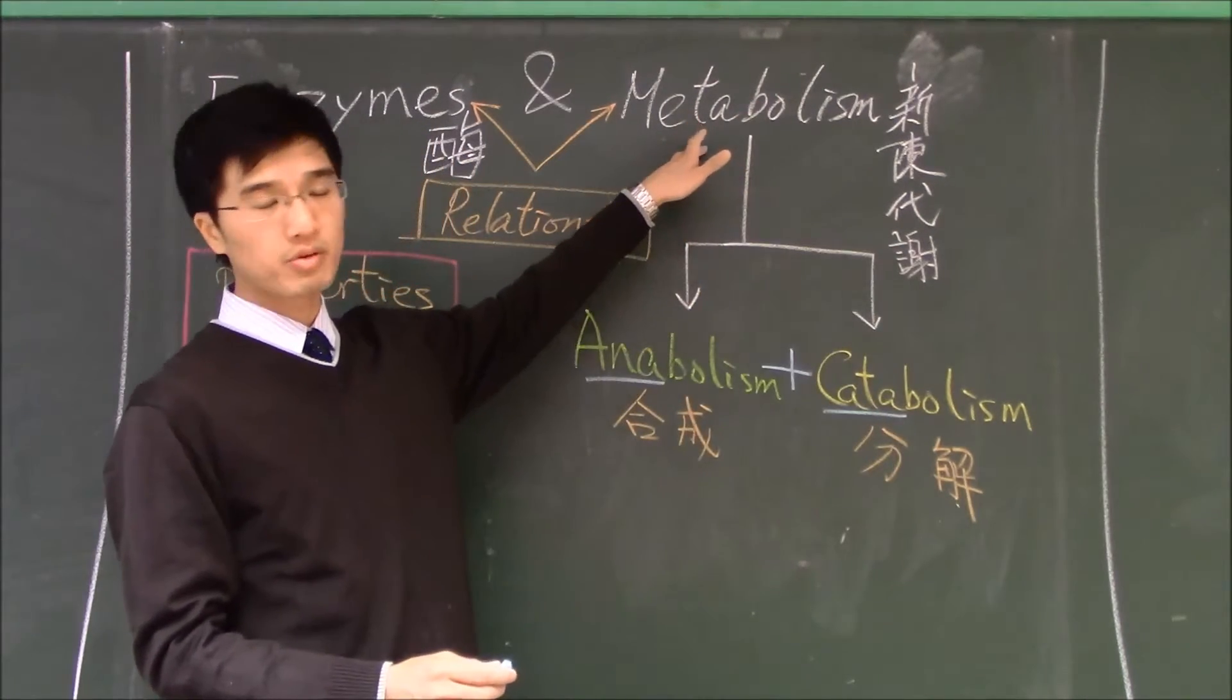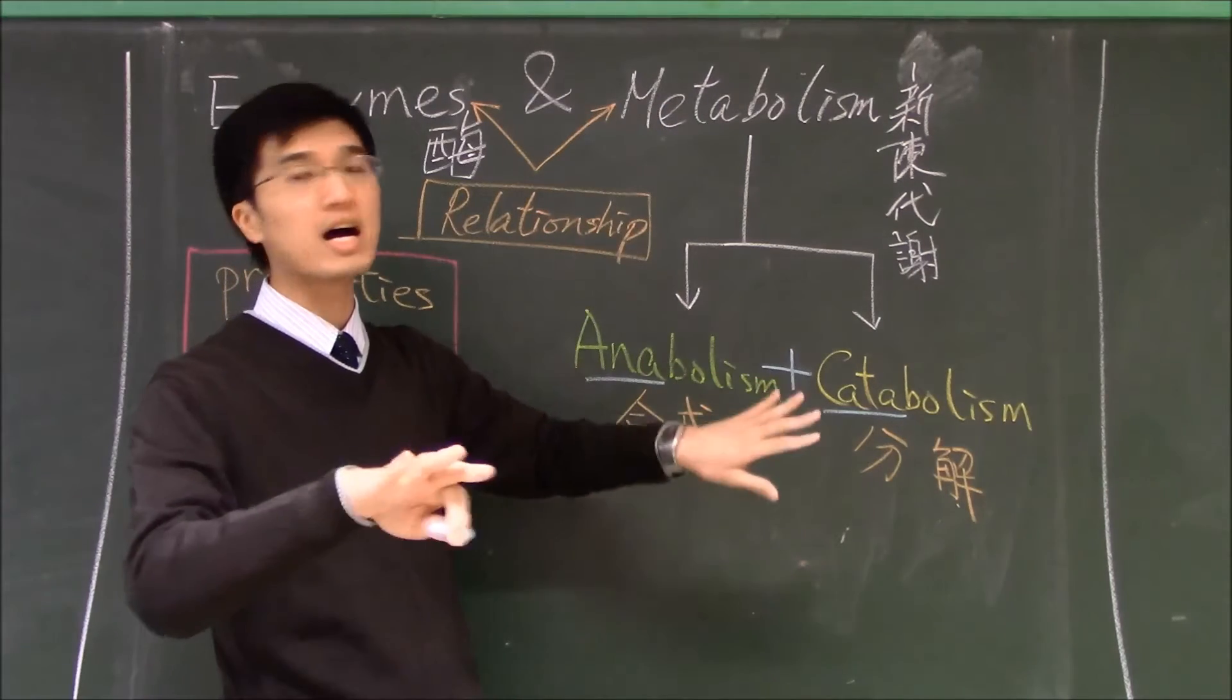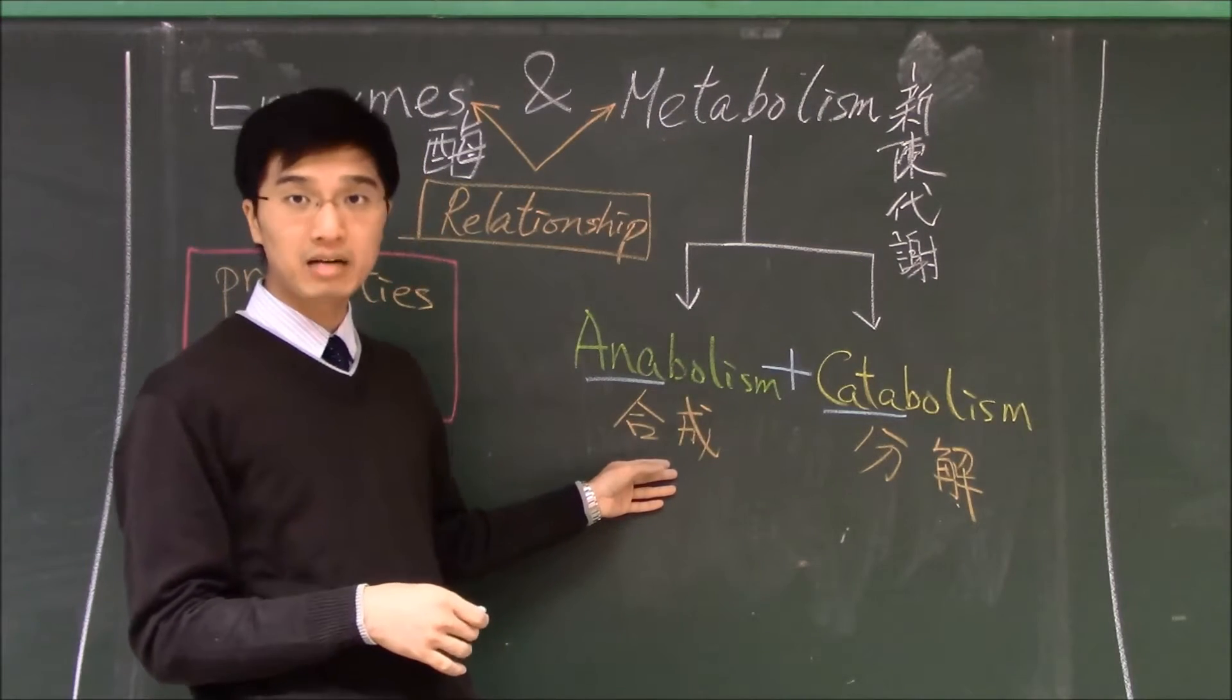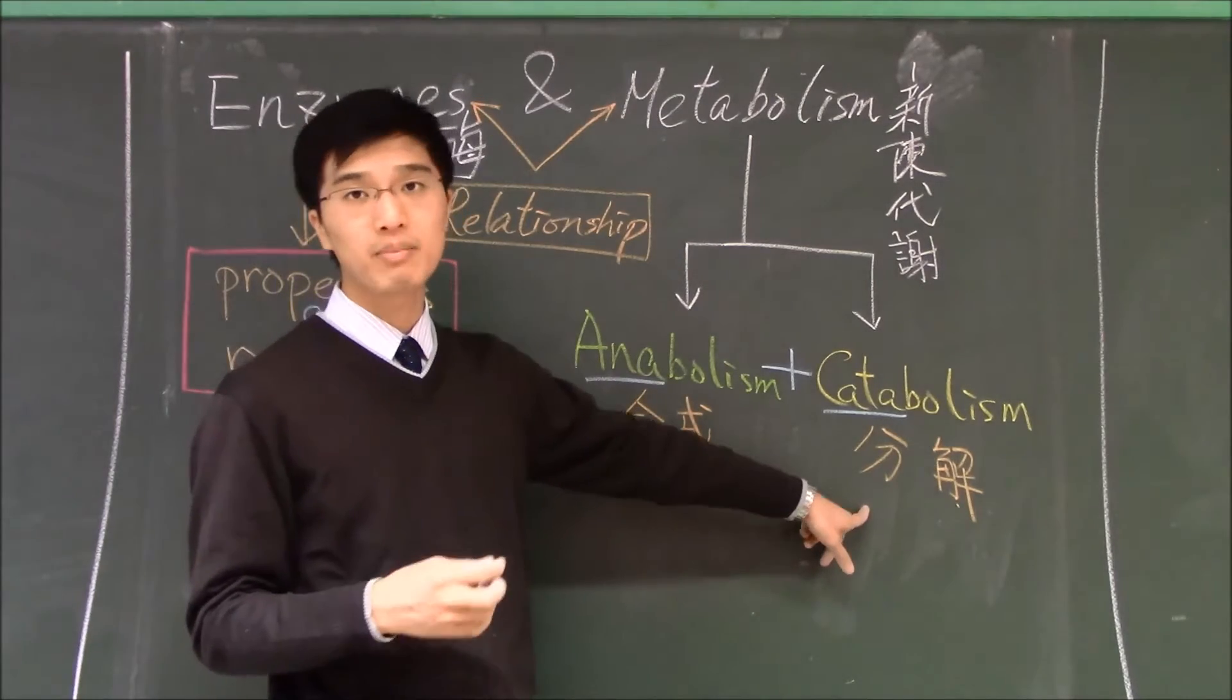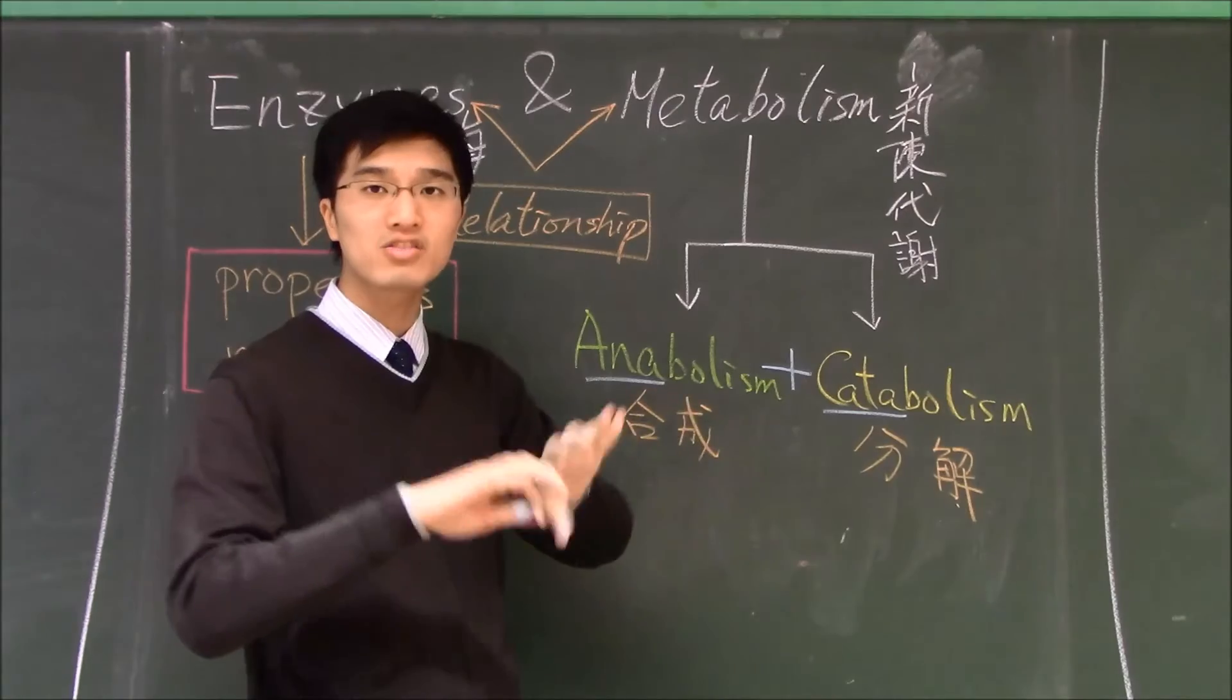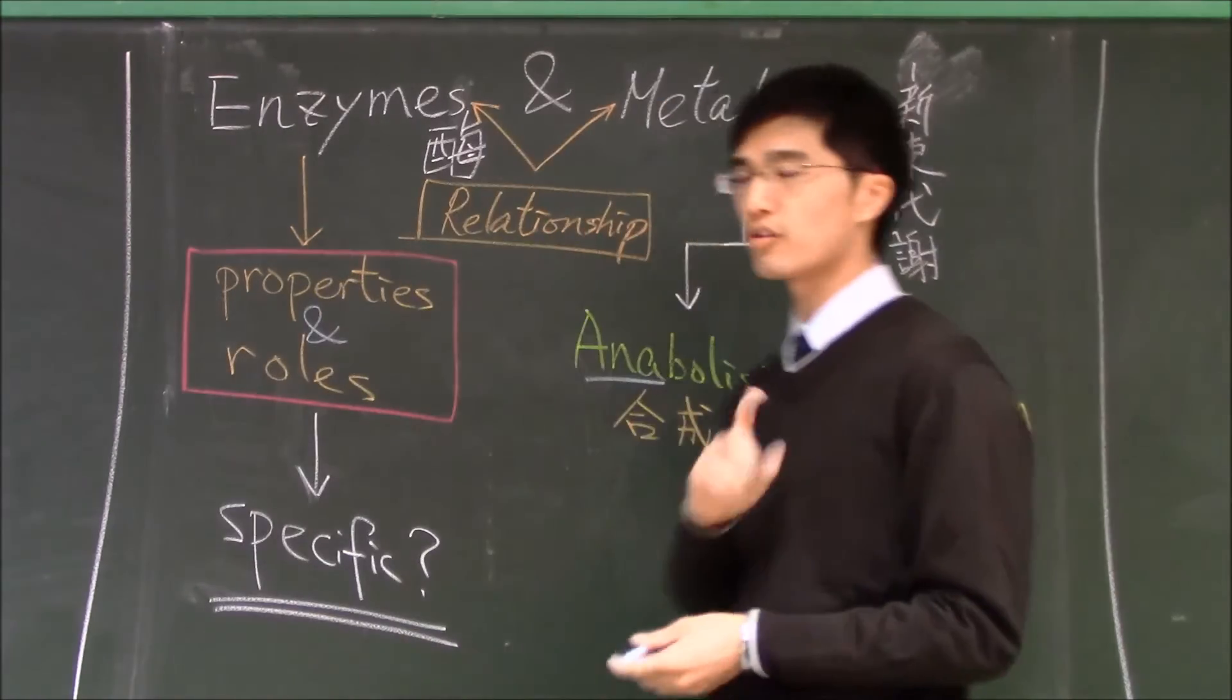Metabolism is divided into two parts. One part is anabolism, building up something, and catabolism, that means breaking down something. That's the first part.